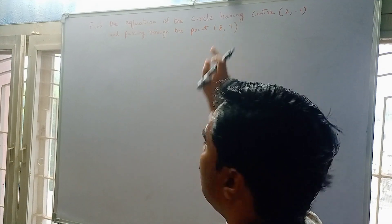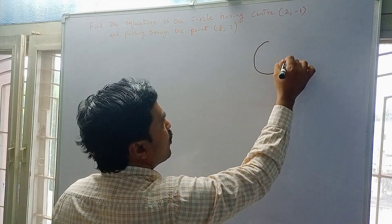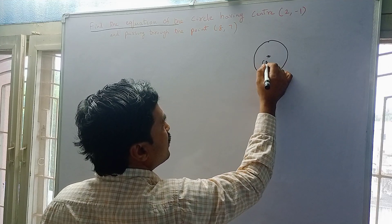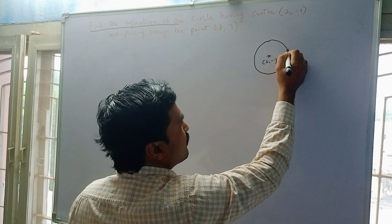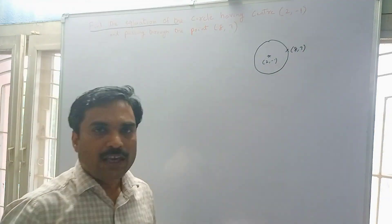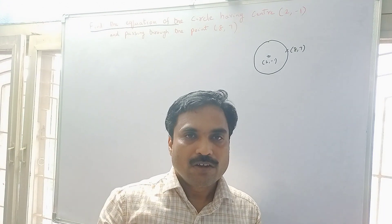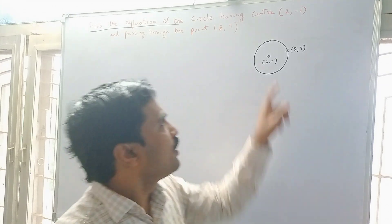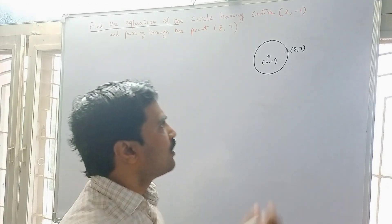For this, just draw a diagram. We have to find the equation of the circle. They have given a center at (2, -1) and the circle is passing through the point (8, 7). For a circle, what you need is the center and the radius. We have the center, so we need to find the radius.